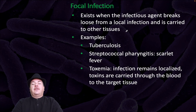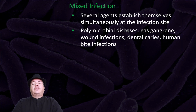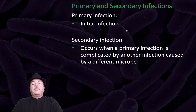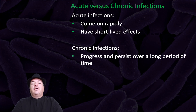A focal infection exists when the infectious agent breaks loose from a local infection and is carried to other tissues — examples include tuberculosis and streptococcal pharyngitis causing scarlet fever. Toxemia is when the infection remains localized but toxins are carried through the blood to target tissues. Mixed infection is where several agents establish themselves simultaneously at the infection site — polymicrobial diseases such as gas gangrene, wound infections, dental caries, and human bite infections. The primary infection is the initial infection; a secondary infection occurs when a primary infection is complicated by another infection caused by a different microbe. Acute infections come on rapidly with short-lived effects, while chronic infections progress and persist over a long period of time.